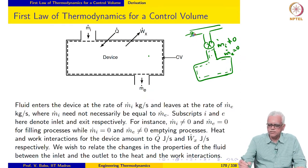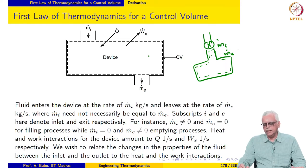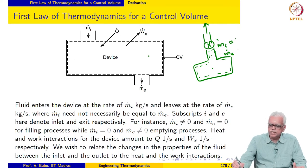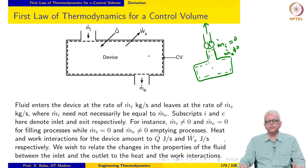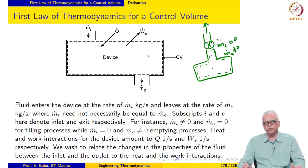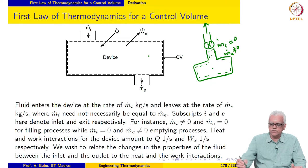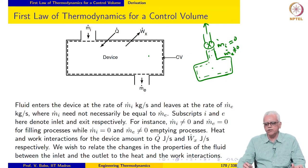Now consider the opposite situation where we are trying to empty a vessel. Initially, let's say this vessel contains air or steam at high pressure and temperature and we are trying to empty it into the atmosphere. In such a case, there is continuous outflow of mass from the vessel but no inflow. So ṁᵢ is equal to 0, but ṁₑ is not equal to 0. We continue this process until the pressure in the vessel falls to ambient pressure, beyond which flow cannot be sustained. This is also an unsteady process.